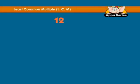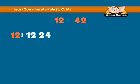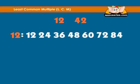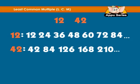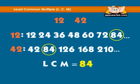Find the least common multiple of 12 and 42. We list the multiples of each number. The multiples of 42 are 42, 84, 126, 168, 210. We see that the number 84 is the smallest number that appears in each list. Hence, the LCM is 84.